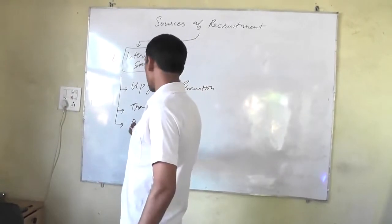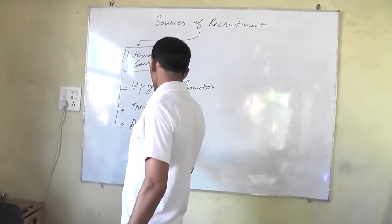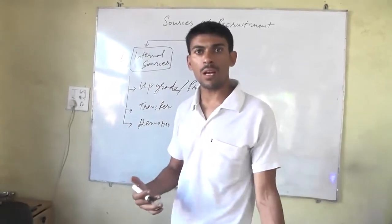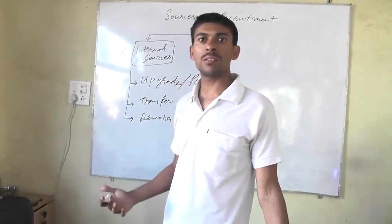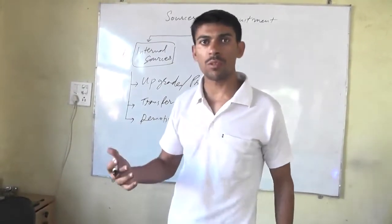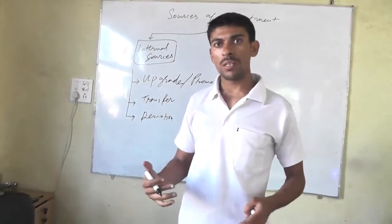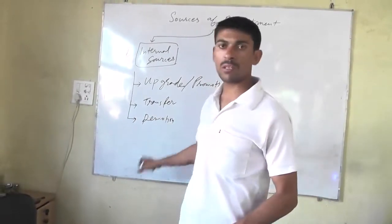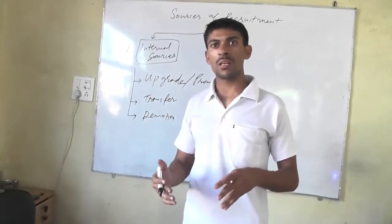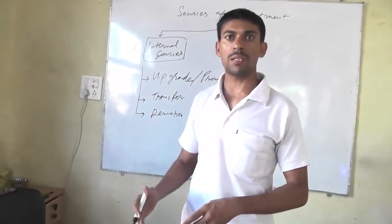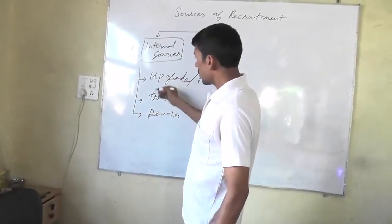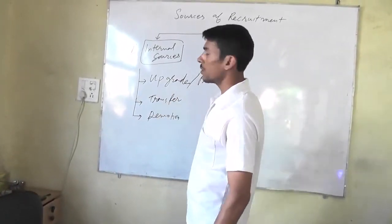Demotion is another internal source. If you need a helper and an employee's performance is not good, you can demote them for smaller work at a lower level of management. These are the three internal sources of recruitment.